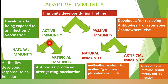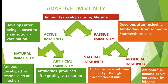Adaptive immunity can be classified into active and passive immunity. In active immunity, our own body produces the antibodies against any type of antigenic challenge and gives an immune response. But in case of passive immunity, we are not producing the antibodies; instead we are receiving the antibodies from someone or somewhere else.